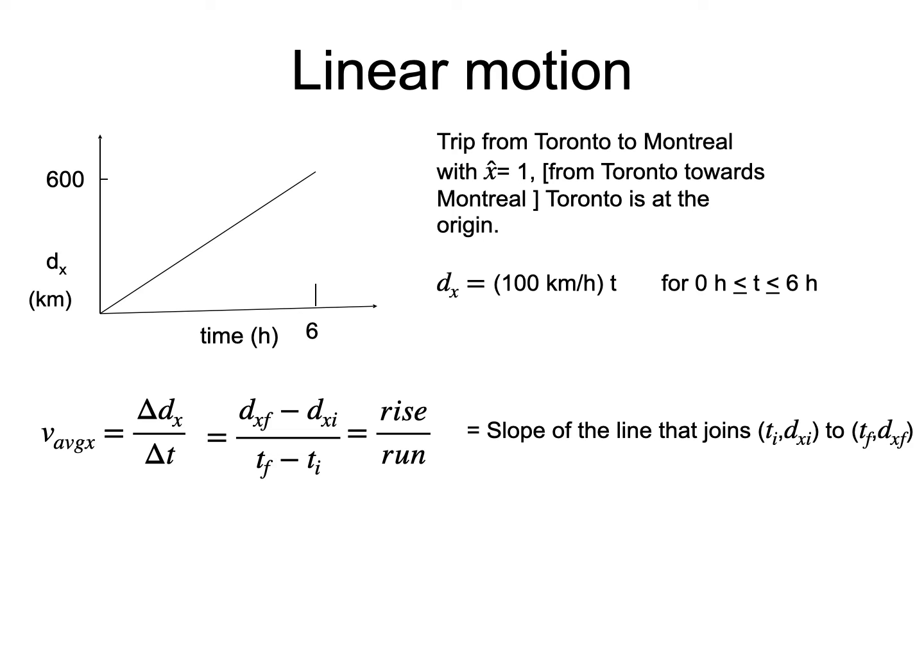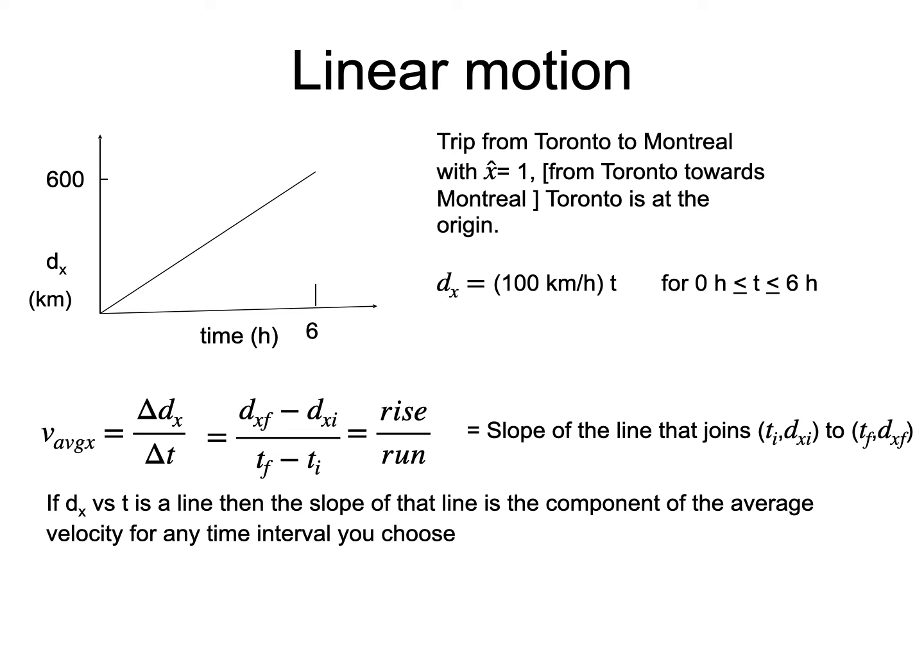Here, since the whole relationship between d_x and time is linear, any choice of time interval would lead to the same value for the slope, which is the x-component of the average velocity.